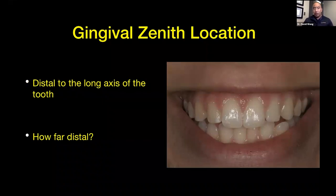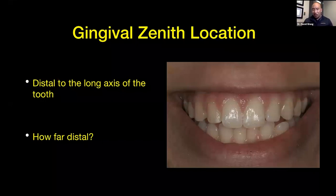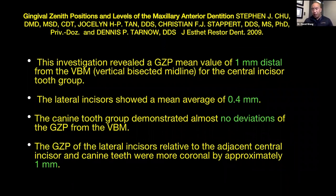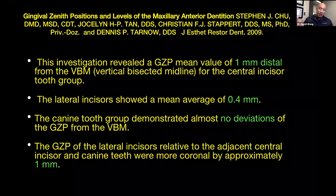As far as gingival zenith locations — where does it go? We all know that teeth are not perfectly symmetrical, so our centrals aren't perfect elliptical shapes. We don't put the zenith right in the middle; we know it goes to the distal a little bit. Looking at a paper from Dr. Steven Chu, who does a lot of dental implant work with Dr. Dennis Tarnow at Columbia, they looked at where the gingival zenith position should be. For centrals, the gingival zenith should be one millimeter distal to the midline of the central; 0.4 millimeters distal to the midline of the lateral; and on canines, it's dead center right on the midline.